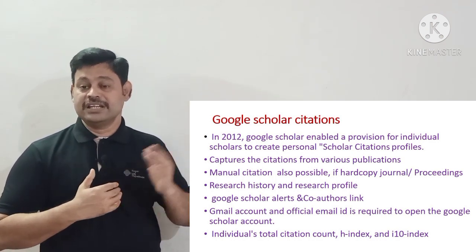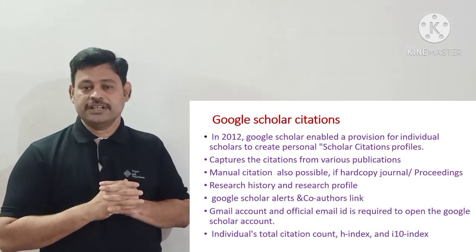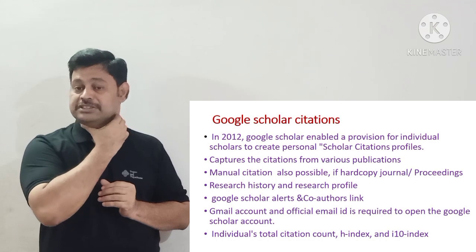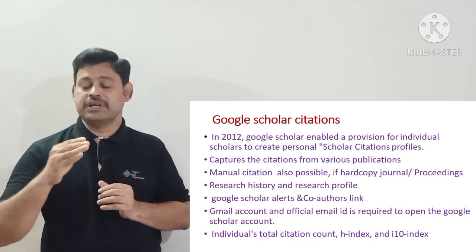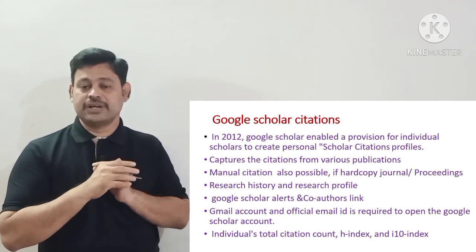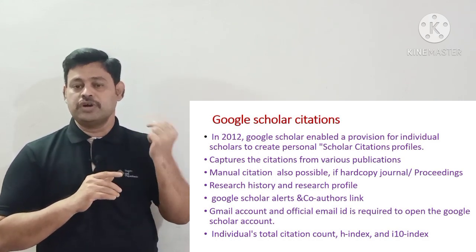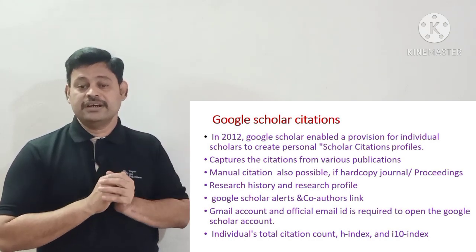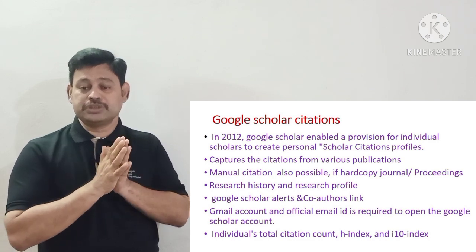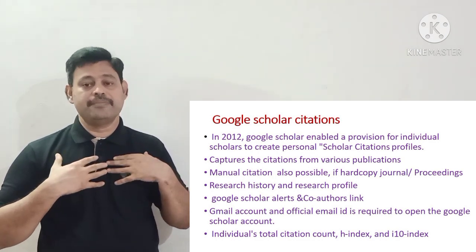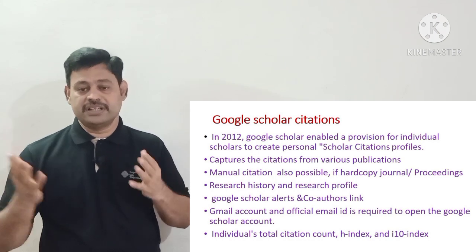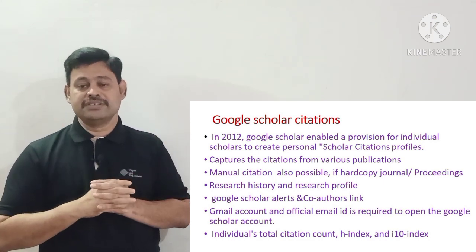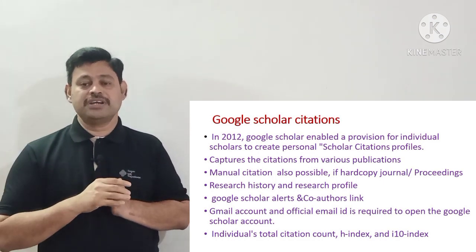For creating a Google Scholar profile, only one Gmail account is enough along with an official email ID to verify your account. Within two minutes, anyone can open a Google Scholar profile. The Google Scholar Citation page gives your individual total citation count. For example, I have published around 30 articles and my total citation count is 304, which shows how many are h-index and how many are i10 index.